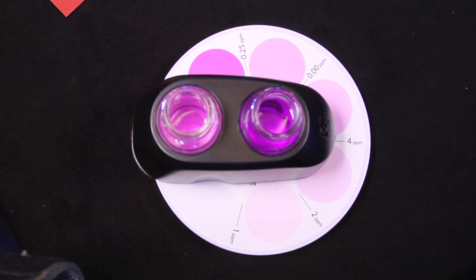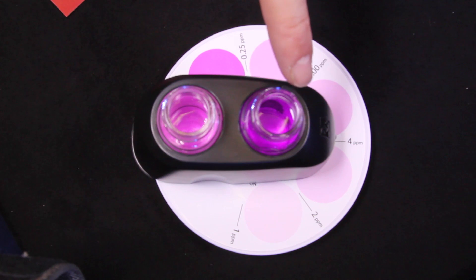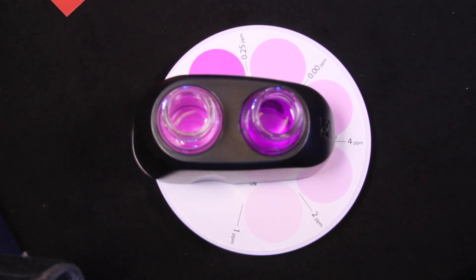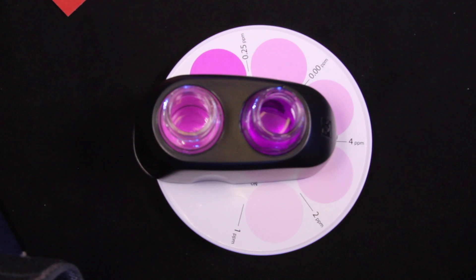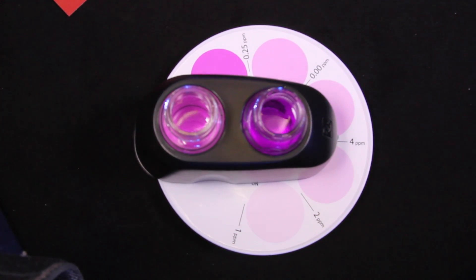Now we're looking at our results and we can see that our test sample is actually darker than the highest level here. What we just did was the low range test. We can actually move to the high range test. In that test we're going to use just one milliliter of water from the aquarium mixed with 15 milliliters of RO water. That'll give us a more accurate high range reading to tell us exactly where we are.